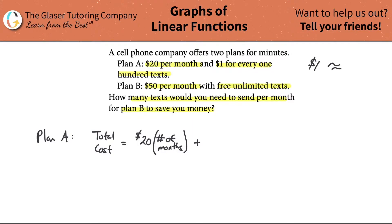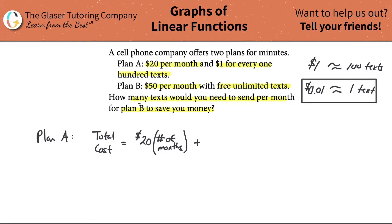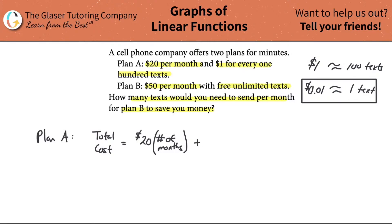If it's one dollar for 100 texts, then one text costs you one cent — or one hundredth of a dollar. Since the question asks how many texts per month, it's better to have our variable in terms of per single text rather than per 100 texts. So Plan A will be: twenty dollars a month times the number of months, plus one cent times the number of texts.